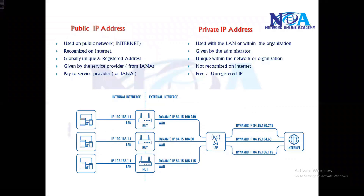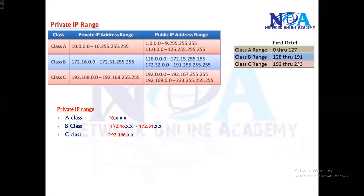This is about private and public IPs. We need to understand the differences between private and public addresses, and we need to know how to identify the private address range. Private and public addresses are very different — there are plenty of public addresses. I generally recommend memorizing the private IP range, since the private range is small and everything else is public.